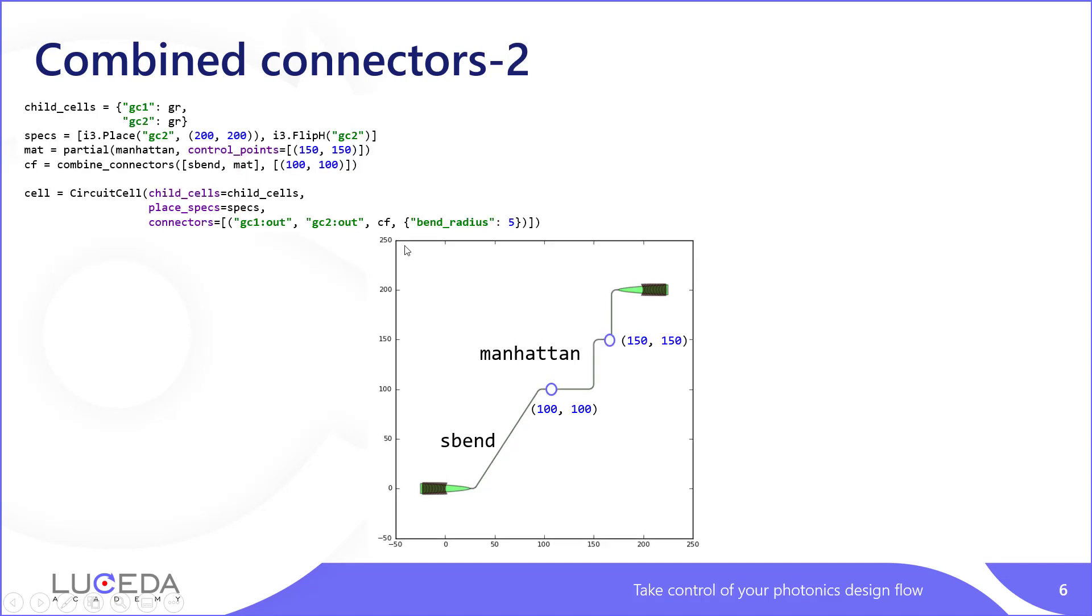If you want to change the properties of an individual connector in a combined connector, you can do so using partials. In this example, we add a control point 150-150 to this Manhattan section, which is the second section of this combined connector.